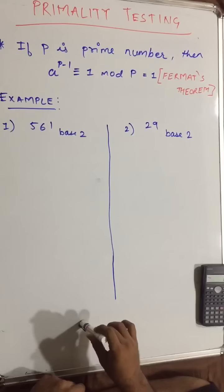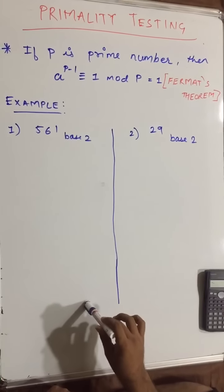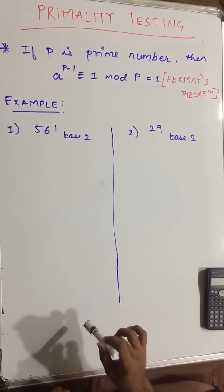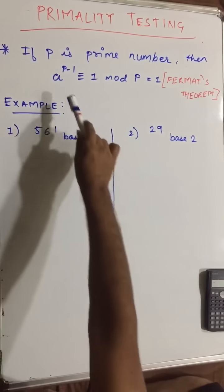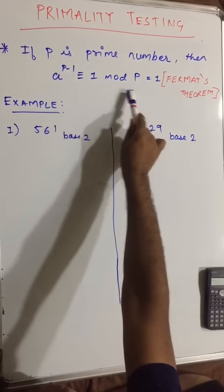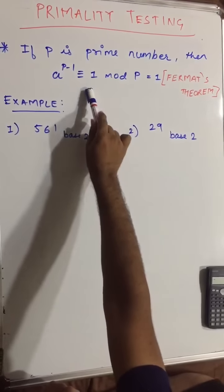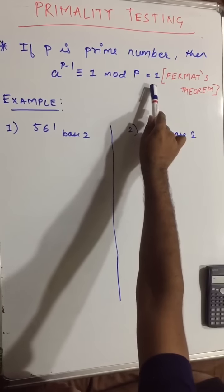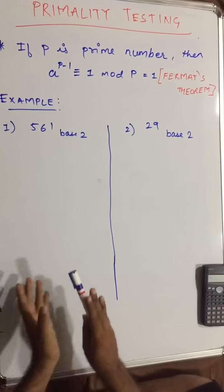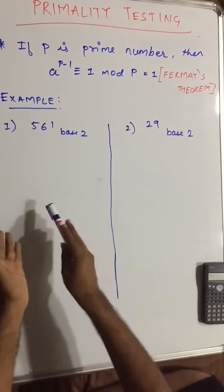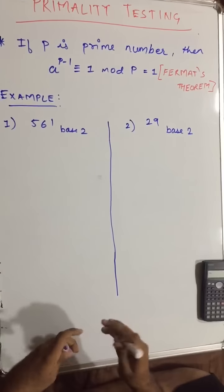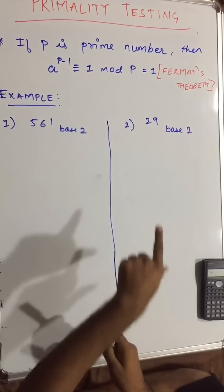Now the primality testing is to check whether the given number is actually prime or not. So if this sort of equation happens in solving of our example, our answer will always be equal to 1. So first of all, I would like to solve the second example, then we will move to the first one.